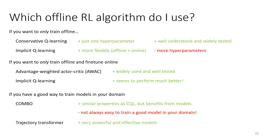Trajectory Transformer can be a good choice because it has very powerful and effective models. The downsides are that it's extremely computationally expensive to train and evaluate, and because it's not learning a policy, there are still some limitations on horizon. So if you have very long horizon, a method that is more Dyna-like and benefits from dynamic programming may still be better. Offline RL is a very rapidly evolving field, and it could be that by next year some of these recommendations will change — this is roughly what things look like as of when I recorded this lecture, which is late 2021.